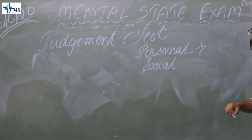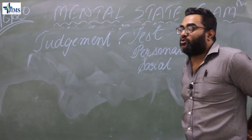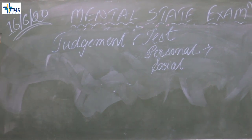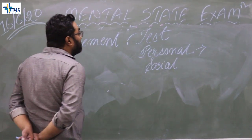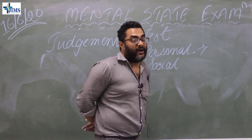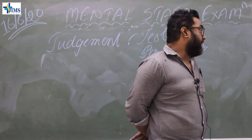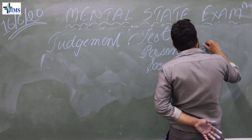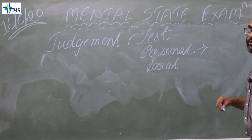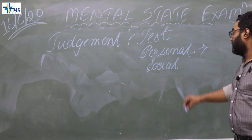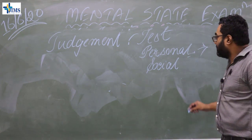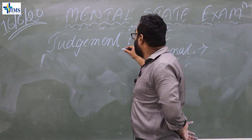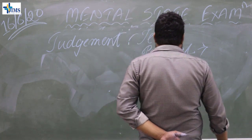In personal judgment, by observation and questioning, we see whether the patient is well-groomed, able to take care of themselves, able to bathe every day, and how they came to the OPD. We also ask relatives whether the patient is able to take care of himself. Social judgment is how the patient interacts with other members of the family, friends, and peers.